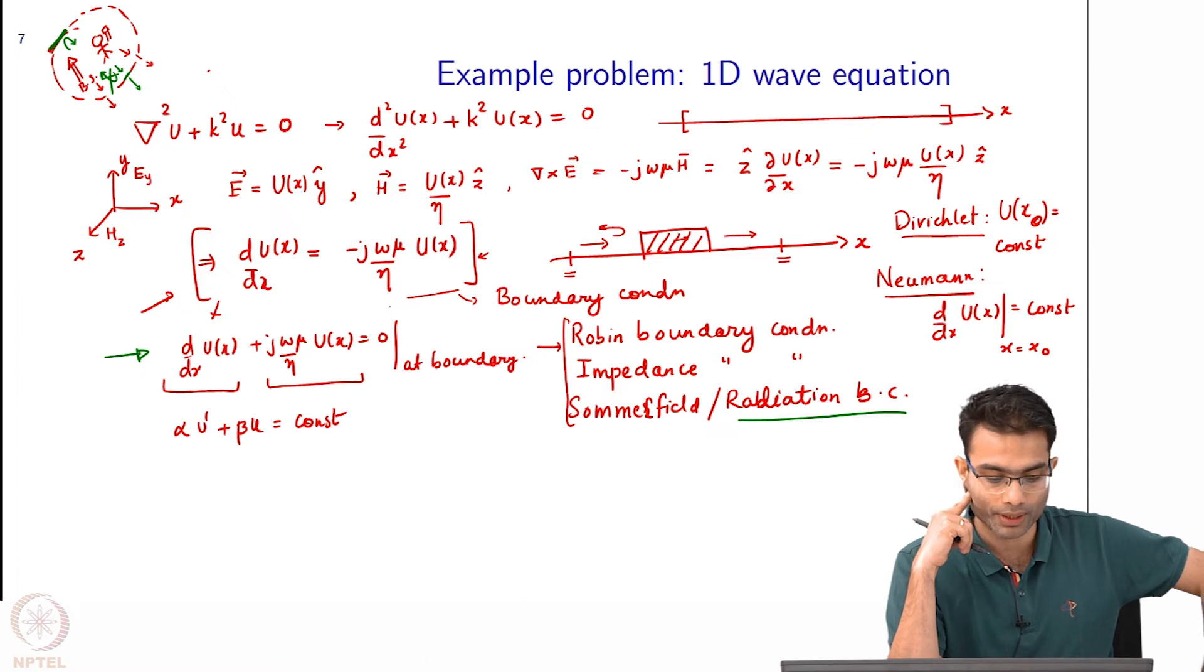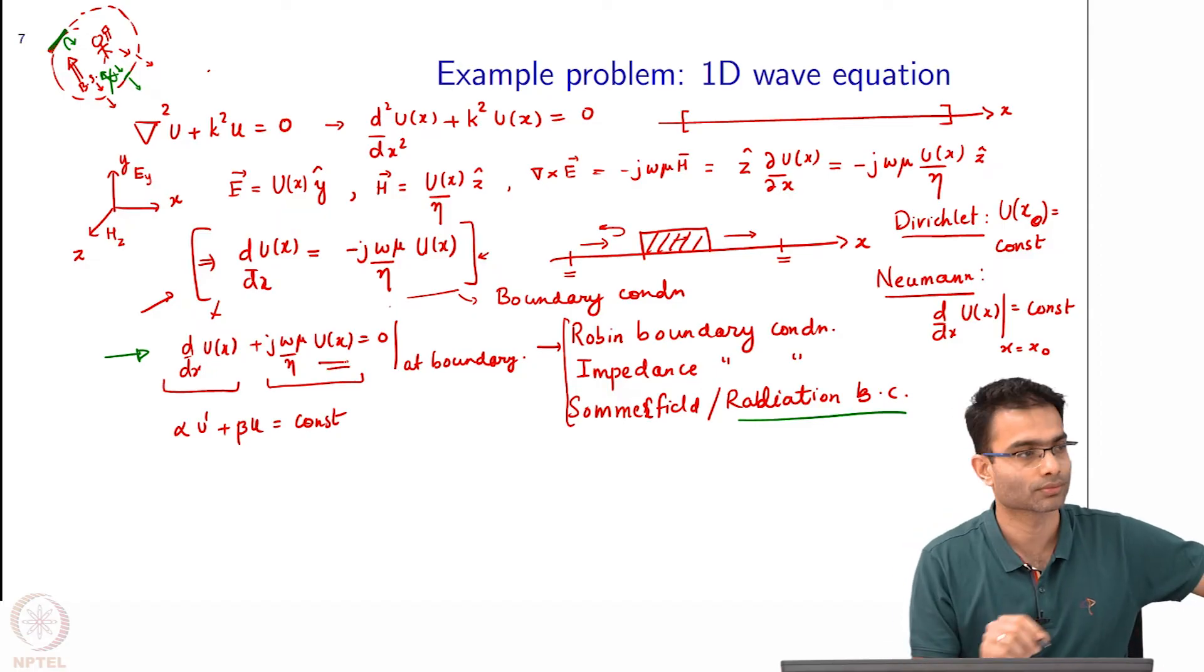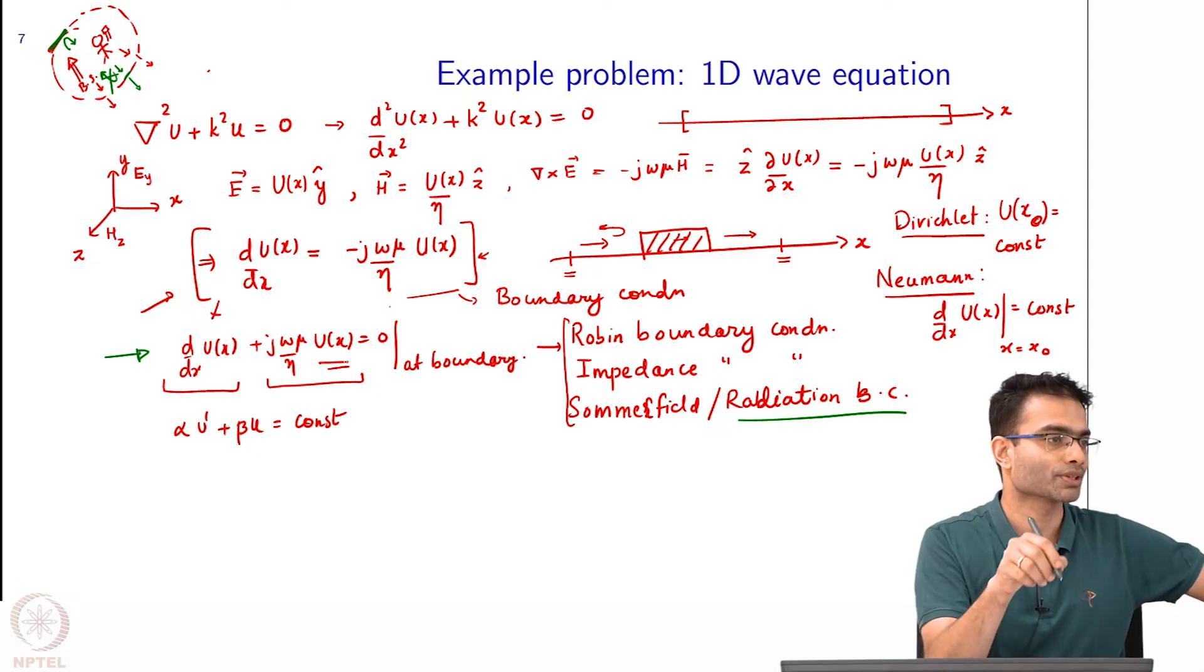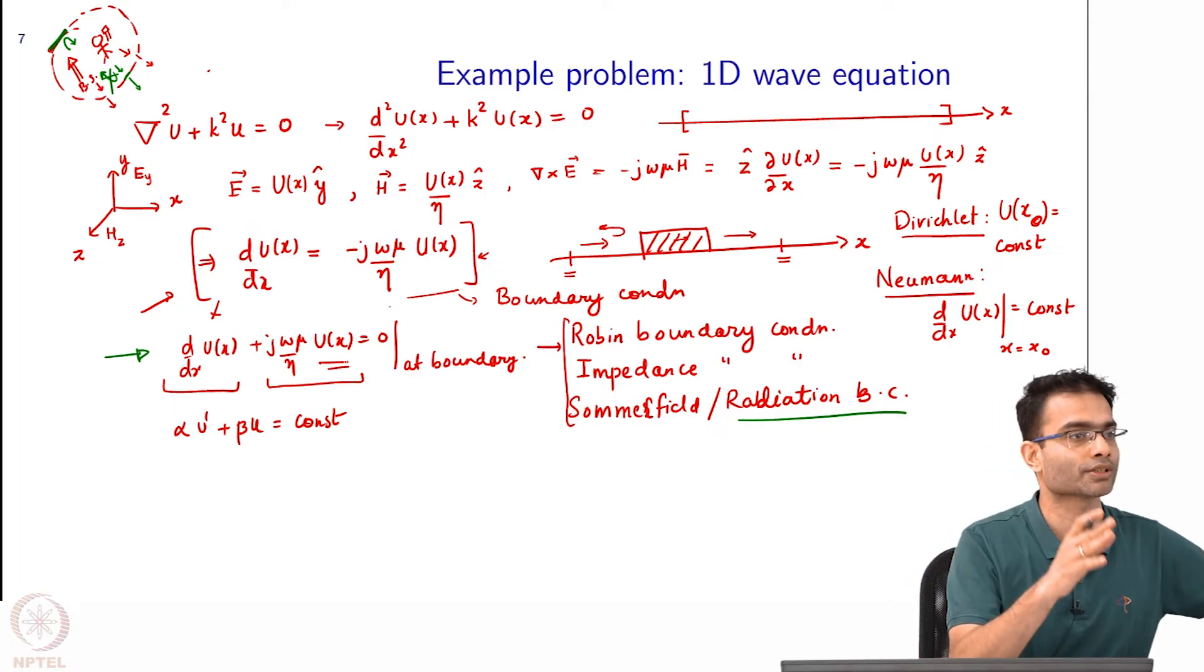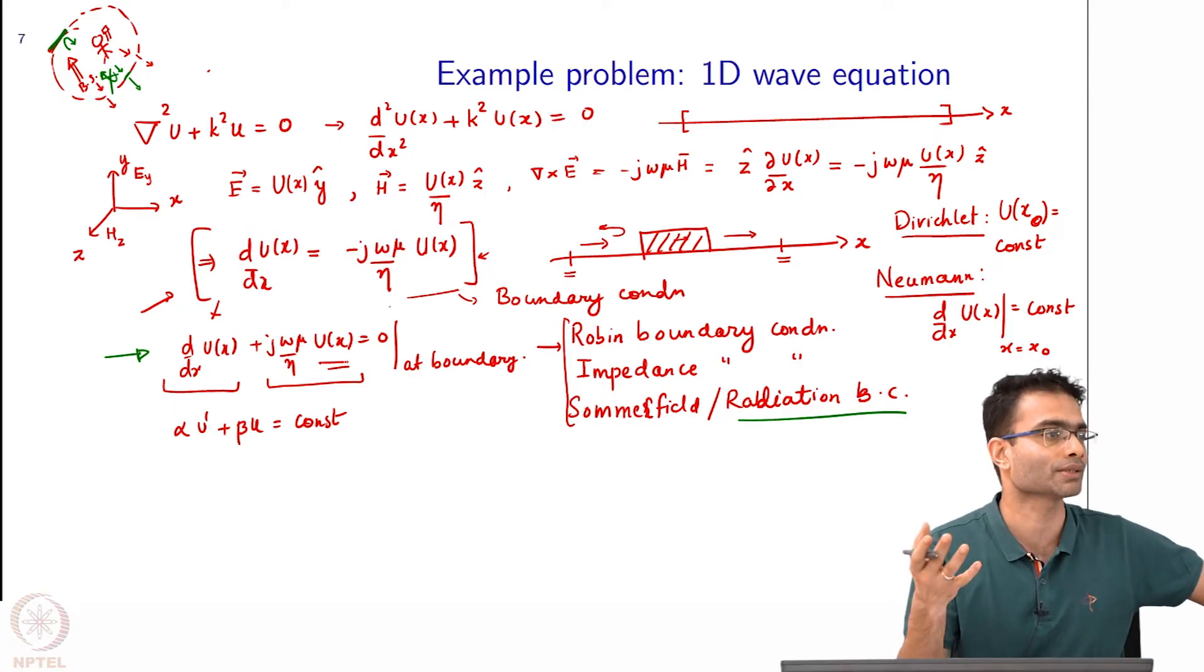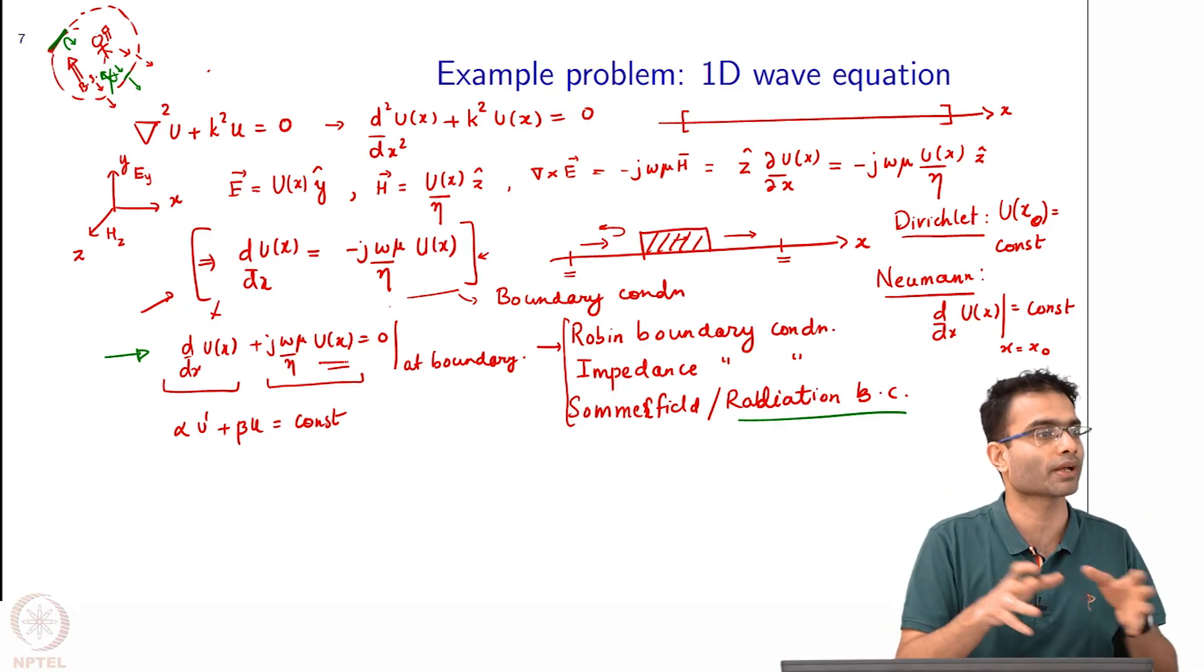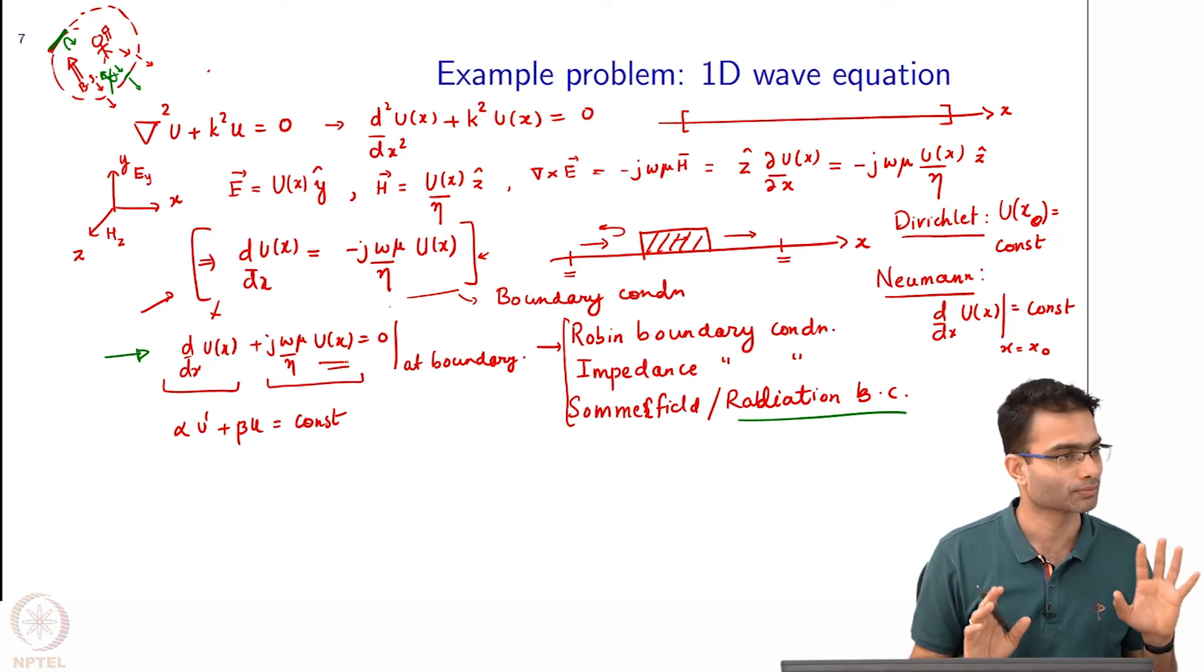The question is: is this boundary condition dependent on the boundary location? Look at the boundary condition - does it depend on the location of the boundary? Because it depends on u of x. At whatever x I am, I put this. So it is not independent. Unlike the Dirichlet and Neumann boundary conditions where I am setting u of x equal to constant or du by dx equal to constant that seems to not depend on where I am. But on the other hand this boundary condition adapts to where I am, because u of x and du by dx both are together being set to 0.